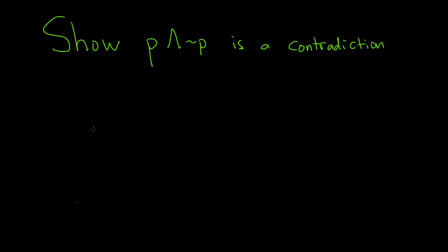In this problem we're going to show that the statement p and not p is a contradiction. To do that, we're basically going to make a truth table and just verify that this is always going to be false.